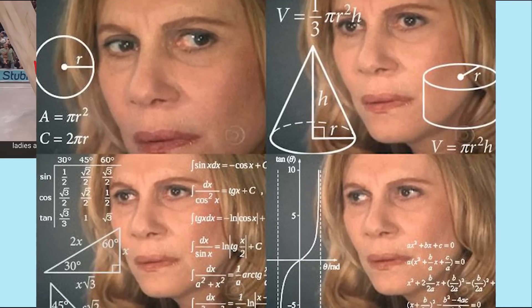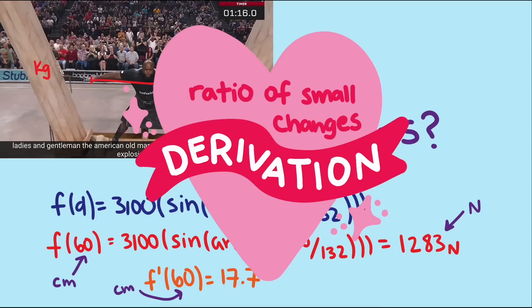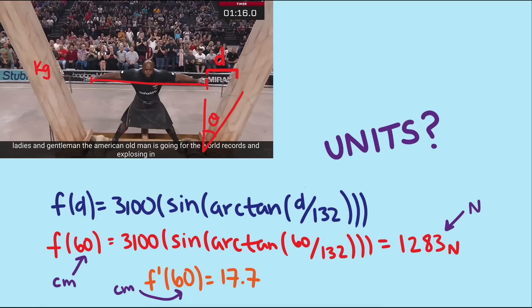The derivative of our function at d equals 60 gives us a value of 17.7. But what does that 17.7 mean? Well, let's first figure out the units for the value to help us make sense of it. Our input was distance in centimeters, our output is a force in Newtons. Derivatives are ratios of small changes with a change in output divided by the change in input. So in this case, we have a change in Newtons divided by a change in centimeters. So our units are Newtons per centimeter.